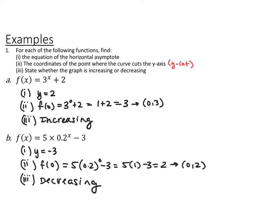For the first function, f of x equals 3 to the x plus 2, the horizontal asymptote is at y equals 2, since that's whatever is being added or subtracted at the end — the vertical shift. An untransformed exponential function has a horizontal asymptote at y equals 0. Plugging in 0 for x: 3 to the 0 power is 1, so 1 plus 2 equals 3. The y-intercept coordinate is (0, 3), and the graph is an increasing function.